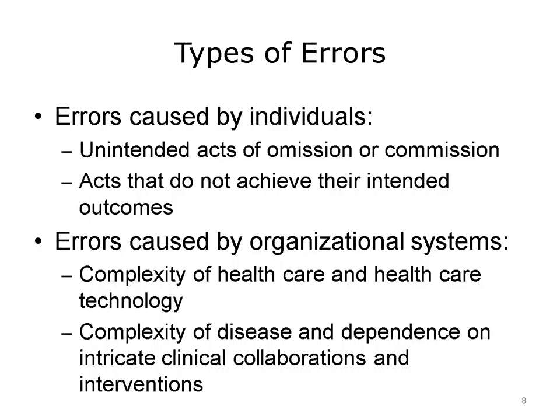There are two fundamentally different types of errors. The first are errors caused by individuals. These may be unintended acts of omission or acts of commission. An example of an unintended act of omission is when a patient is transferred from one unit of the hospital to another and an important medication is left off the medication list. An example of an unintended act of commission is when a medication intended for one patient is delivered to another patient. Individual errors can also be acts that don't achieve their intended outcomes, such as a misdiagnosis based on an error. The second main type of error is error caused within the environment of the provider organization. These system errors are a function of the complexities inherent in provider organizations, in healthcare technology, and in treating multiple disease situations, as well as the dependence of the process of healthcare on a multiplicity of clinicians and interventions.